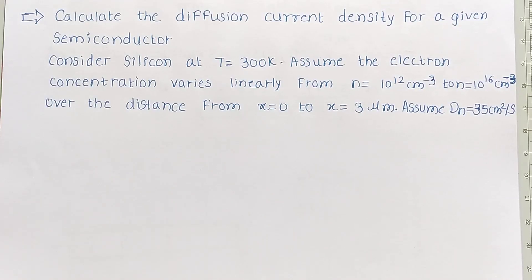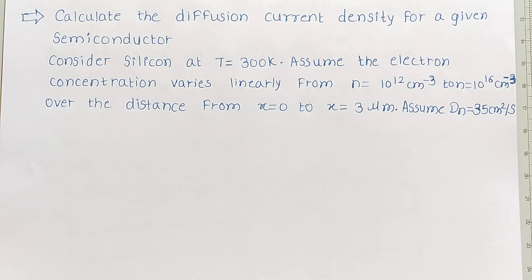In this video, we are going to discuss how to calculate diffusion current density for a given semiconductor. Diffusion current gets generated when there is a particle flow from a high concentration region to a low concentration region. These particles may be electrons or holes, and when they flow from high concentration region to low concentration region, current gets generated.